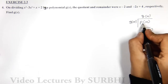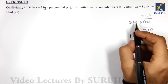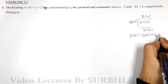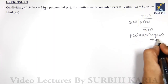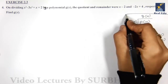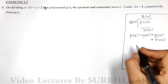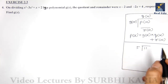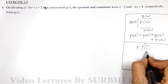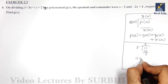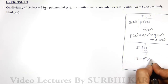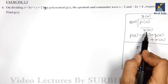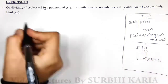So how can you write this? p(x) is equal to g(x) into q(x) plus r(x). In smaller standards you might have studied this — for example, 11 divided by 5: 5 twos are 10 and 1 will be your remainder. You write 11 as 5 times 2 plus 1. Same way, p(x) equals q(x) into g(x) plus r(x).